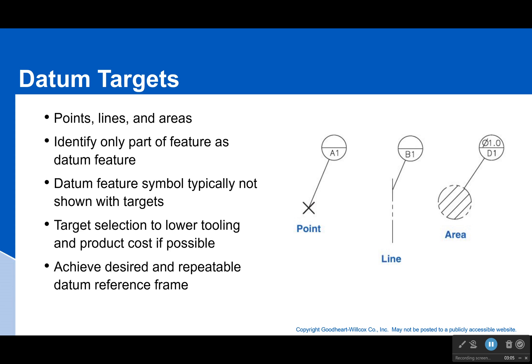You can also have lines as datum targets. Lines are shown using a phantom line, not a center line, because that can be misconstrued — a phantom line is showing us that this is not a real feature on my part; my part doesn't contain a line right there. It's just showing where you're going to touch it and hold it.